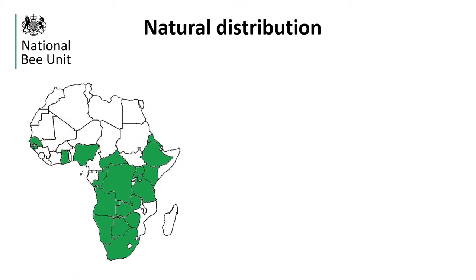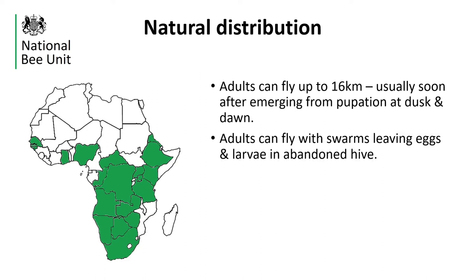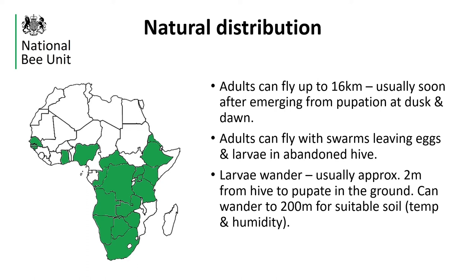This map shows the Small Hive Beetle's natural distribution in Africa. Small Hive Beetles spread naturally in a number of ways. The adults can fly up to 16 kilometres but will typically travel 10 kilometres when looking for colonies of honeybees to infest, and these flights usually take place at dawn and dusk after they have emerged from pupation. Adult beetles can also fly with swarms, leaving behind eggs and larvae in the parent colonies, and larvae can travel up to 200 metres from the hive when looking for suitable soil to pupate, although on average they only travel around 2 metres from the hive.